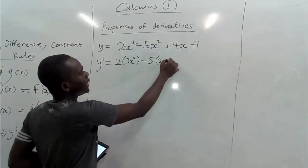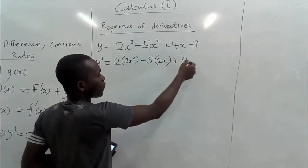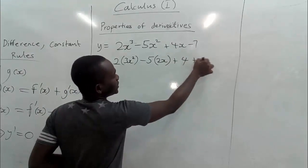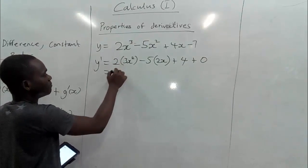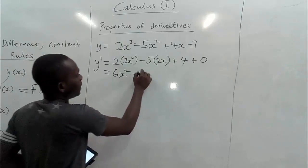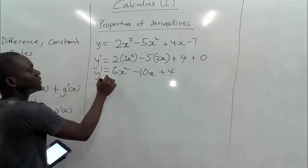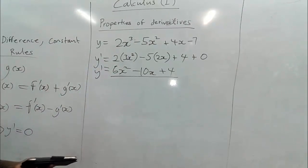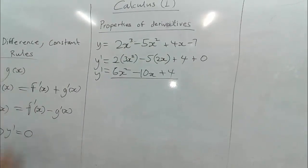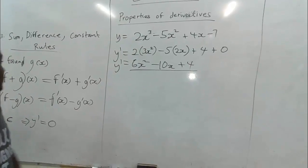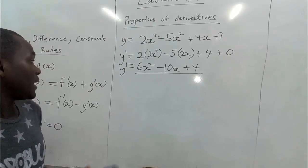Differentiating x squared gives 2x; differentiating 4x gives 4; and the constant 7 goes to zero. Simplifying, we get y prime equals 6x squared minus 10x plus 4. This is our first derivative, combining sum, difference, and constant rules.